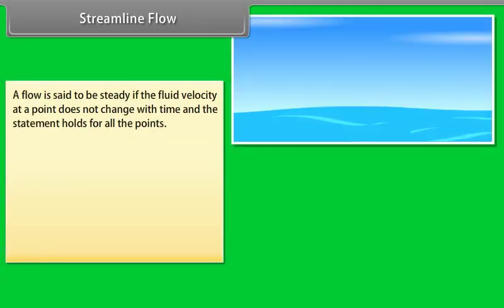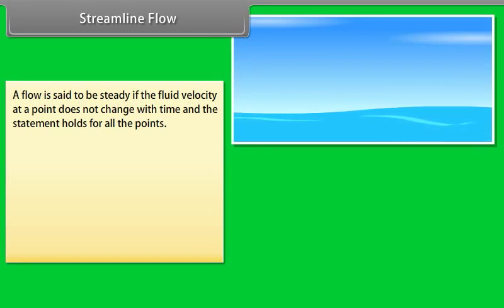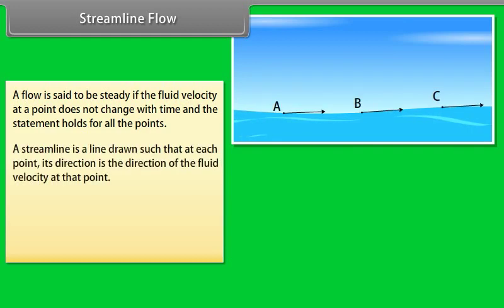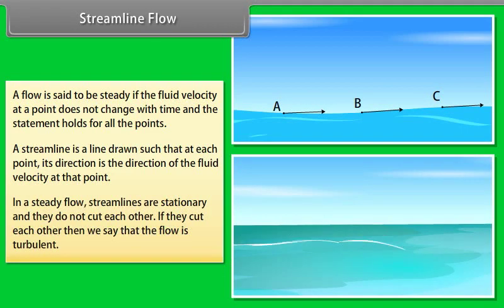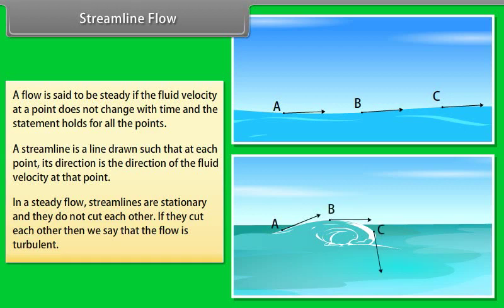A flow is said to be steady if the fluid velocity at a point does not change with time, and this holds for all points. A streamline is a line drawn such that at each point its direction is the direction of the fluid velocity at that point. In steady flow, streamlines are stationary and do not cross each other. If they cross, the flow is said to be turbulent.